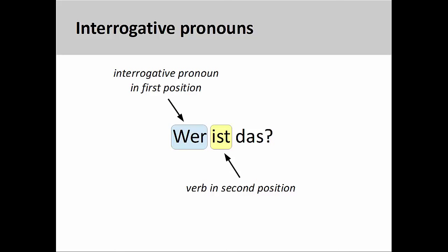In the sentence you see here, 'Wer ist das?' (Who is that?), the interrogative pronoun 'wer' inquires about the identity of a person. You will note that the interrogative pronoun is in the first position, the verb in the second position.